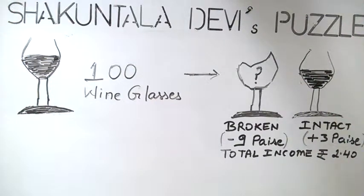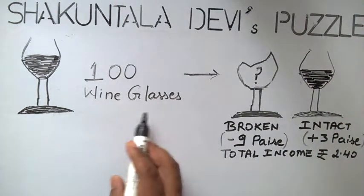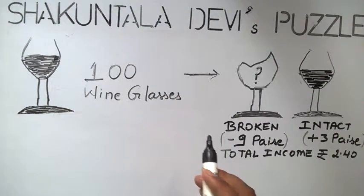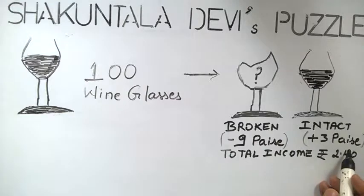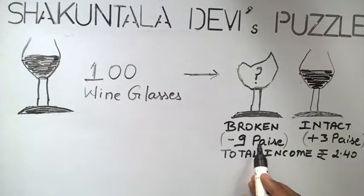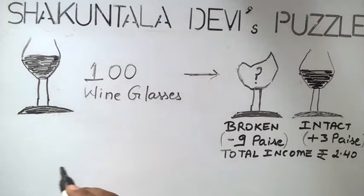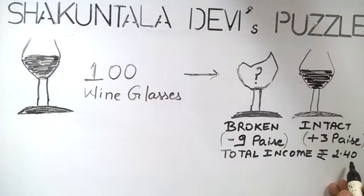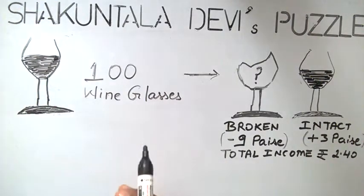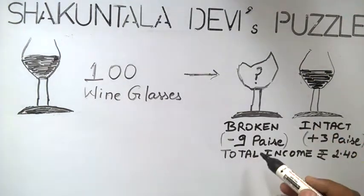In this puzzle, a servant has to deliver 100 wine glasses. For each intact glass, he will be paid 3 paise, and for each broken glass, he will be penalized 9 paise. There is a total income of 2 rupees 40 paise after delivering all the glasses. We have to find out the total number of broken glasses.